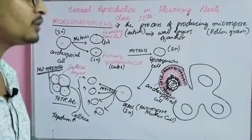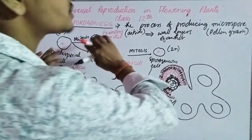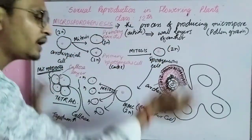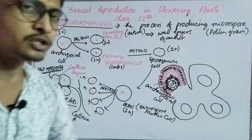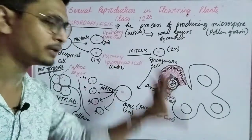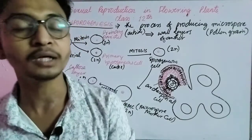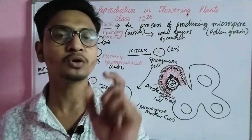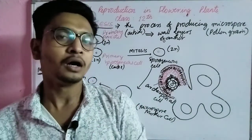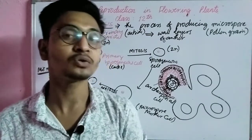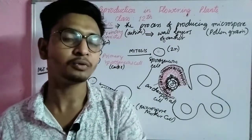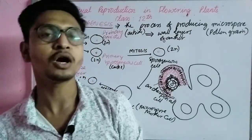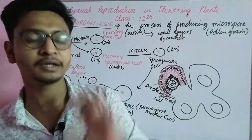So my dears, this is the process of pollen grain formation — that is known as microsporogenesis. I hope this topic has been understood clearly. I have explained microsporogenesis in a very simplified way. If you have understood this topic, please like, share, and subscribe to the channel. We will meet next to study the structure of the pollen grain. Bye bye, have a nice day.